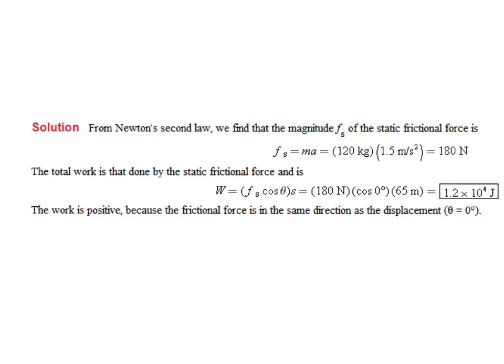So now we're going to take a look at the work done by friction. The frictional force is equal to mass times acceleration. So if the crate has a mass of 120 kilograms and an acceleration of 1.5 meters per second, then the force applied to the crate is 180 newtons. And if that force is being applied through a distance of 65 meters, the angle between the frictional force and the displacement is zero. So we simply have 180 newtons times 65 meters times 1 is equal to 1.2 times 10 to the fourth joules, or 12,000 joules of work.